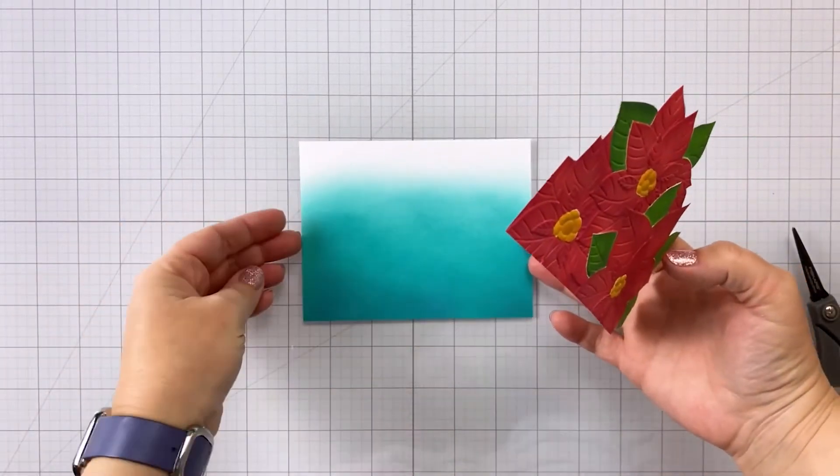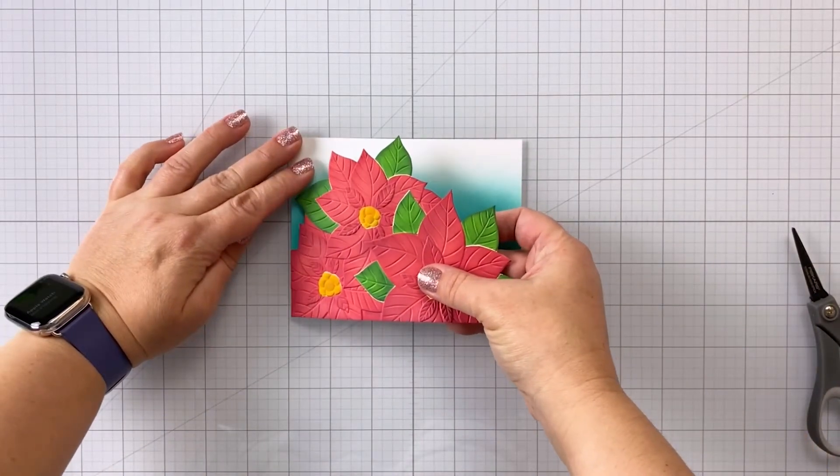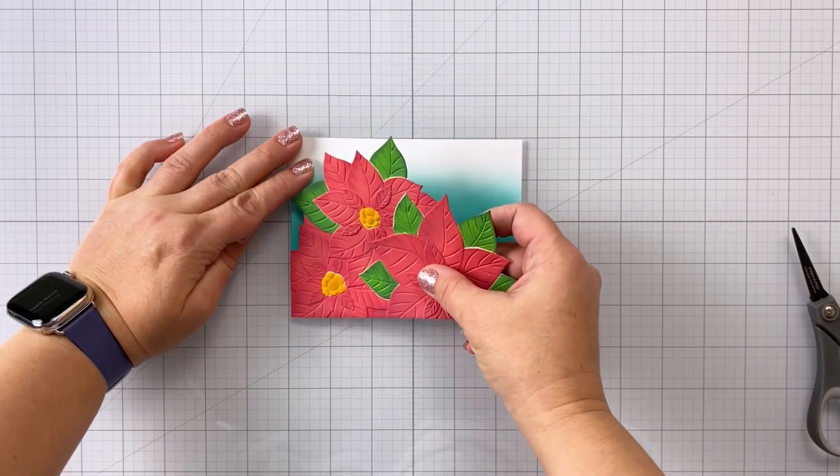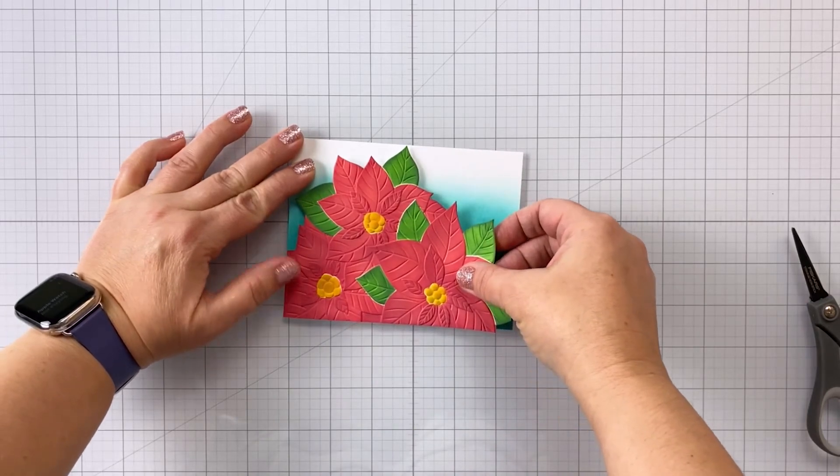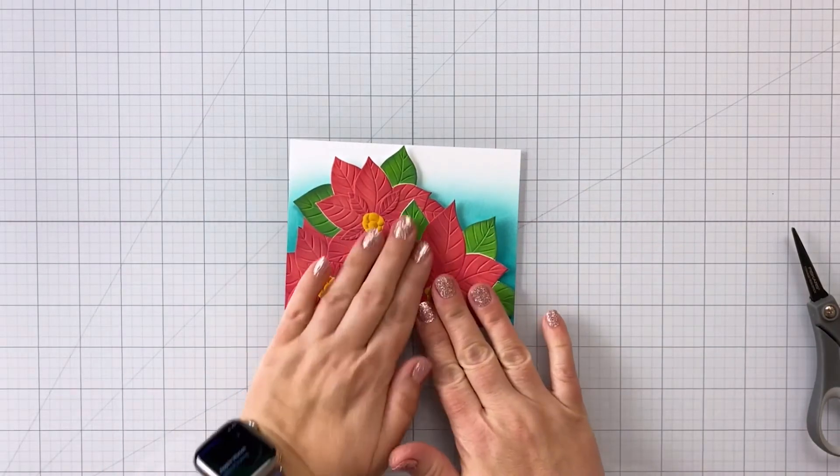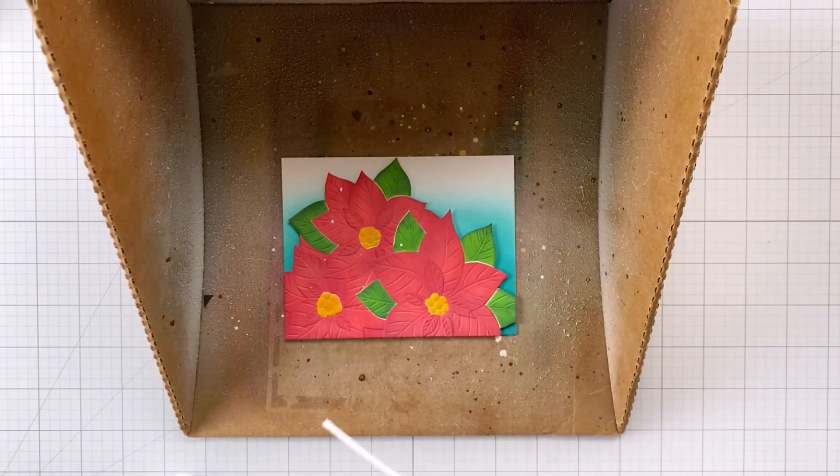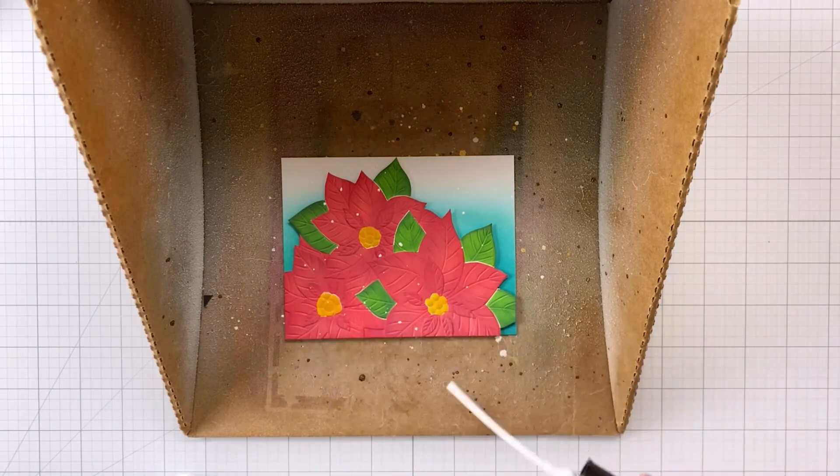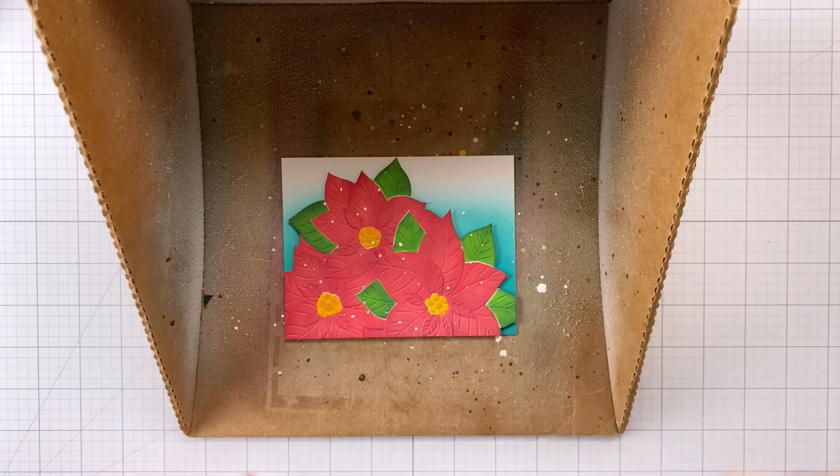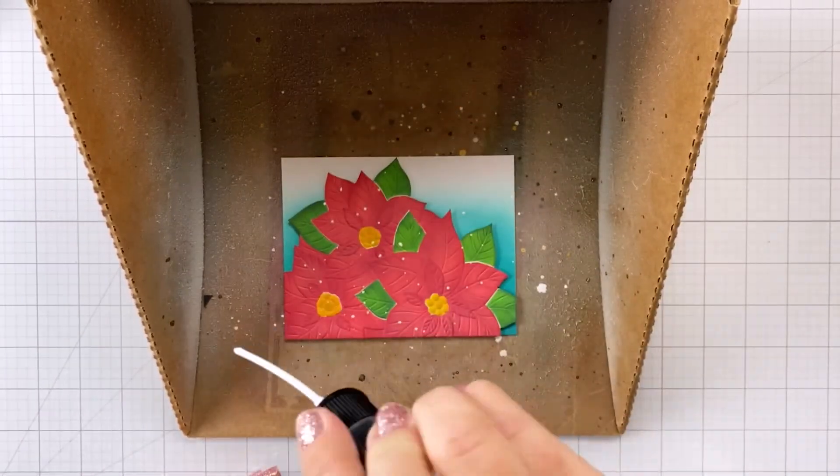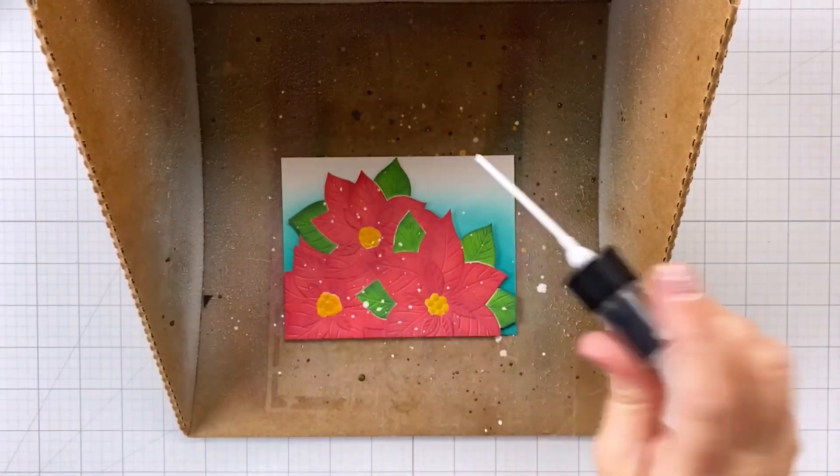So I trimmed that down and I've put some foam strips on the back of my beautiful poinsettia cluster there. And I'm just going to pop this over the top of my background. So you'll see that gorgeous peacock feathers peeking out. And I think this is a beautiful color combination. It's not your standard kind of color combination, but I think the blue and the red and the green all work really well together. So I've got some white spray stain here, the picket fence spray stain, and I'm just flicking a little bit here and there to kind of imitate snow on top of the flowers. And I'm going to set that aside to dry.